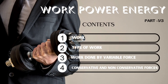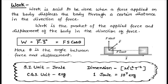In our daily life, work is used to describe any physical or mental activity. For example, a person who pushes a car but fails to move it is supposed to have performed work, and a student is considered to do work by learning a lesson. But in science, work is said to be done when a force applied on a body displaces it through a certain distance in the direction of the applied force. The expression for work done is W = F·s.